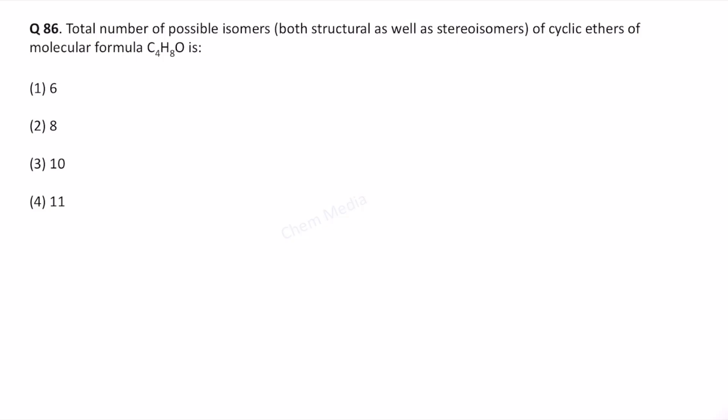Hello everyone, here is a question based on structural and stereoisomers. What is the total number of possible isomers considering both structural as well as stereoisomers of cyclic ethers of molecular formula C4H8O?